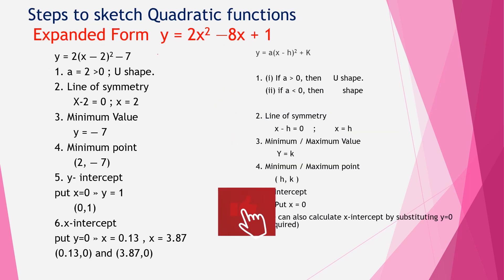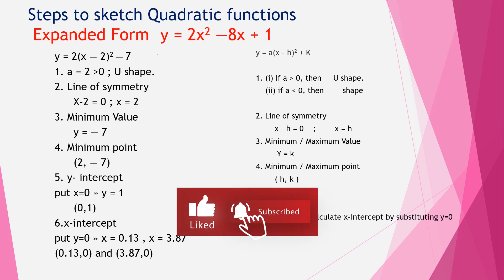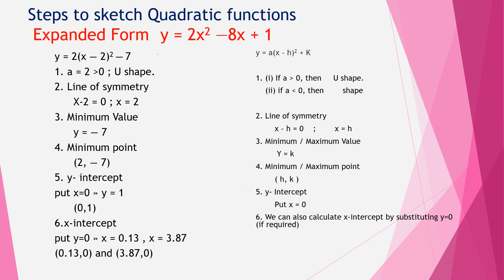Here a = 2, so the curve is U-shaped. The line of symmetry is x = 2, the minimum value is y = −7, and the minimum point is (2, −7). The y-intercept is (0, 1). For x-intercepts, we put y = 0; in this case we have two x-intercepts. Now we have enough information to sketch this quadratic.